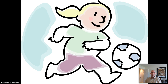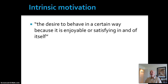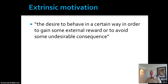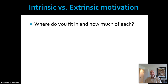The first two motives suggest that she really enjoys playing soccer — we call this intrinsic motivation, defined as the desire to behave in a certain way because it's enjoyable or satisfying in and of itself; nobody has to make her do that. But the last two motives suggest she really doesn't care for the game. Instead, she's motivated by an incentive, and we call this extrinsic motivation, defined as the desire to behave in a certain way in order to gain some external reward or to avoid some undesirable consequence or punishment. Motivation is rarely, if ever, 100% intrinsic or 100% extrinsic — it'll be some combination of the two.